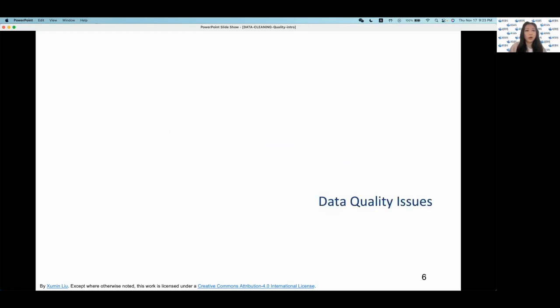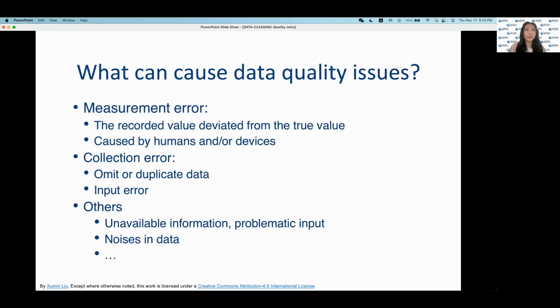So what can cause data quality issues? Some examples could include measurement error from humans or devices, collection error, which could look like missing and/or duplicate data, as well as input error. Humans are prone to making errors, we aren't perfect. So with data sets that involve humans that are manually entering information, mistakes or typos could occur, data entries including typos or missed entries could happen.